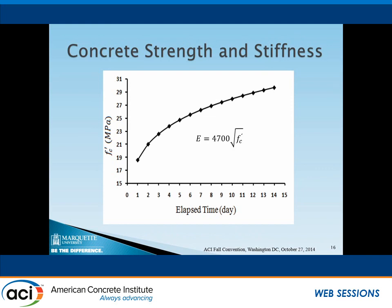For the linear analysis, Young's modulus has a significant effect on the model results. So we used test data for concrete strength change over the first 14 days. We tested concrete with the same mixture design as used in the bridge at day one, two, three, seven, and 14, then used interpolation to generate the concrete strength change in between. Young's modulus of concrete was calculated using the ACI equation at different days and input into the model.